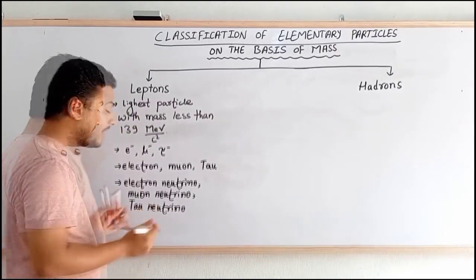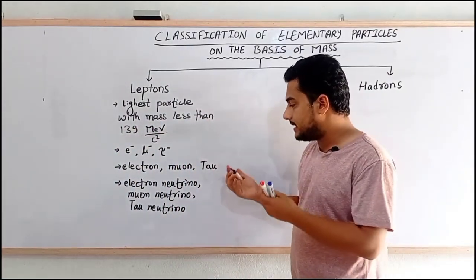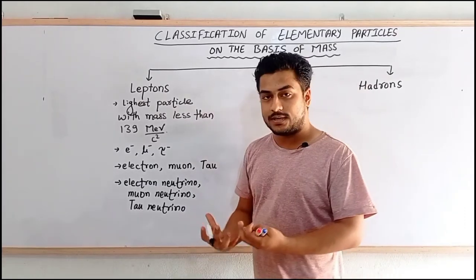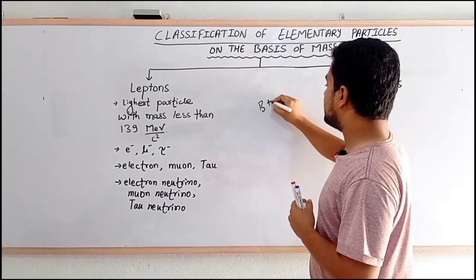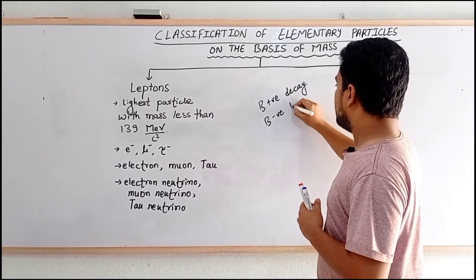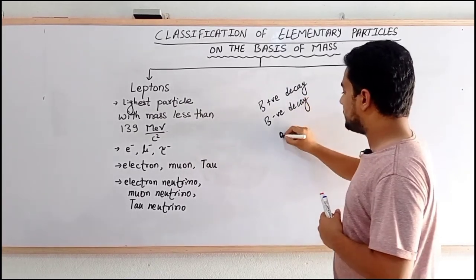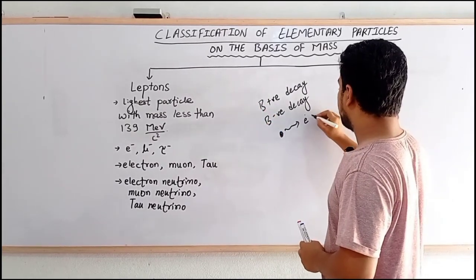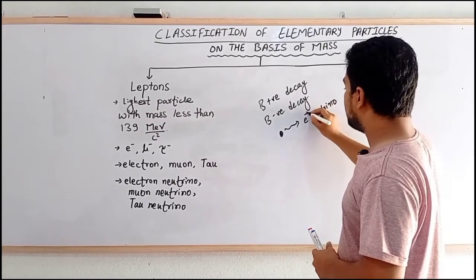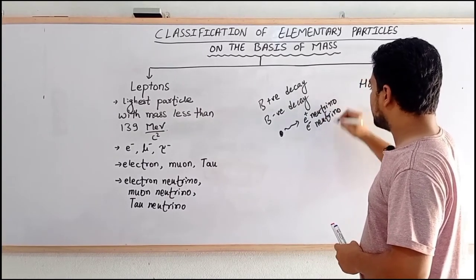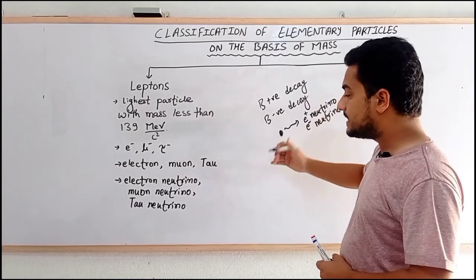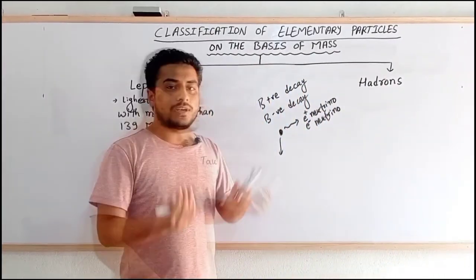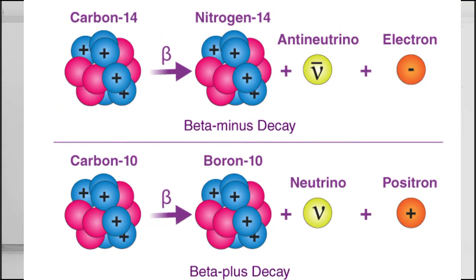You might be wondering what neutrinos are and how electron neutrinos, muon neutrinos, and tau neutrinos fit here. You may have read about beta positive and beta negative decay — it is a process in which the nucleus disintegrates. During beta positive and beta negative decay, electron neutrinos are produced. Similarly, during related decay processes, muon neutrinos and tau neutrinos are also produced.